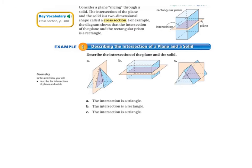Today we'll be starting on page 389 in your math textbook. Let's start at the top where it has the discussion about the cross-section. It says, consider a plane slicing through a solid. The intersection of the plane and the solid is a two-dimensional shape called a cross-section. For example, the diagram shows that the intersection of the plane and the rectangular prism is a rectangle.